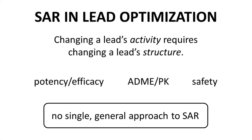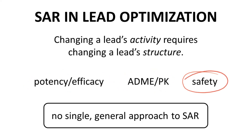The fundamental idea behind lead optimization is that to change, hopefully improve, a molecule's activity, one needs to change a molecule's structure. This is the crux of SAR, Structure Activity Relationships. In terms of activity, we can discuss potency and efficacy, which typically trend together, ADME and PK, and safety. There is no single universal method for picking which groups to test in a lead series to optimize a structure, but this video presents some commonly used approaches.